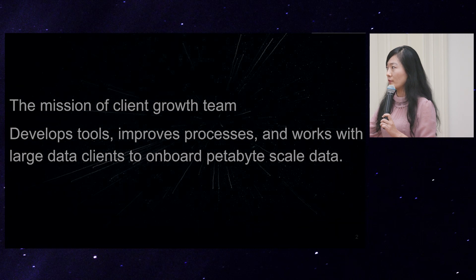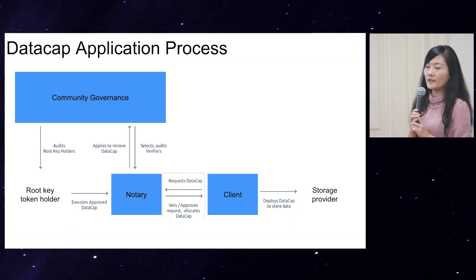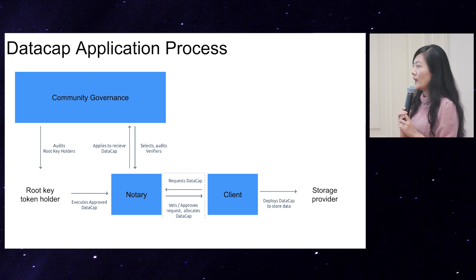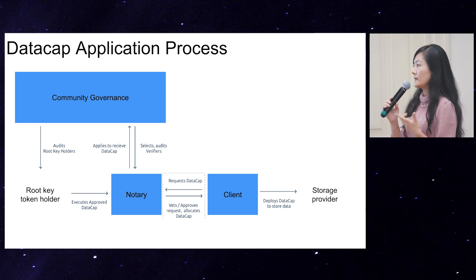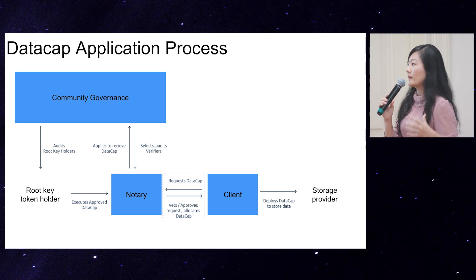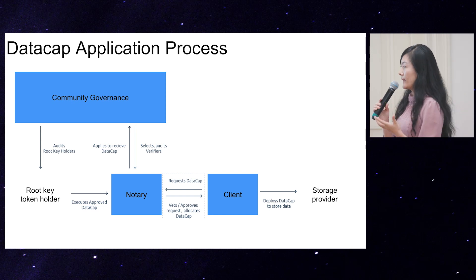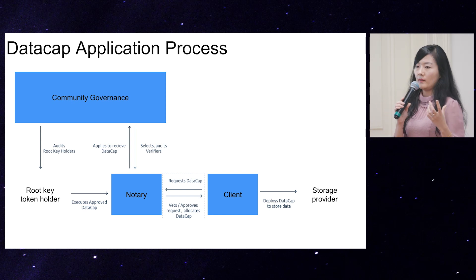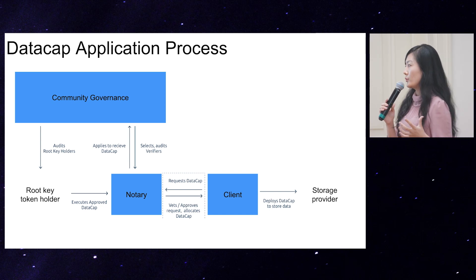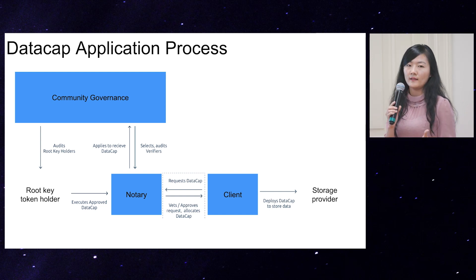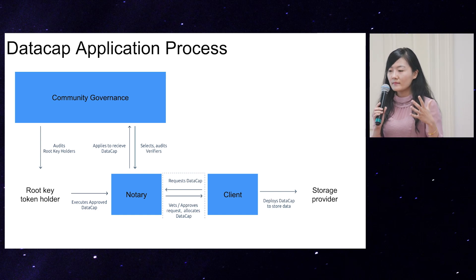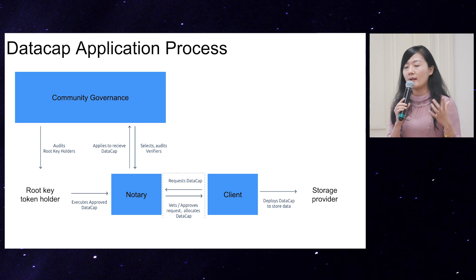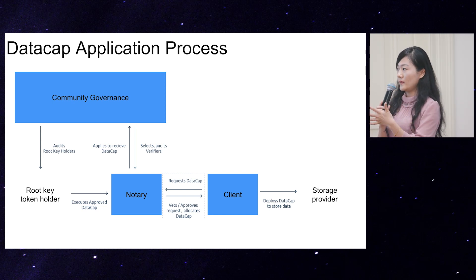To achieve that, we first need to solve the data cap application process issue. There are multiple personas involved in this ecosystem, including notary, client, storage provider, and community governance. As a client, you need a certain amount of data cap in order to store your data. The process is very similar to when you apply for a mortgage — you need people to validate your credit score and credibility so you can get a certain amount of loan.